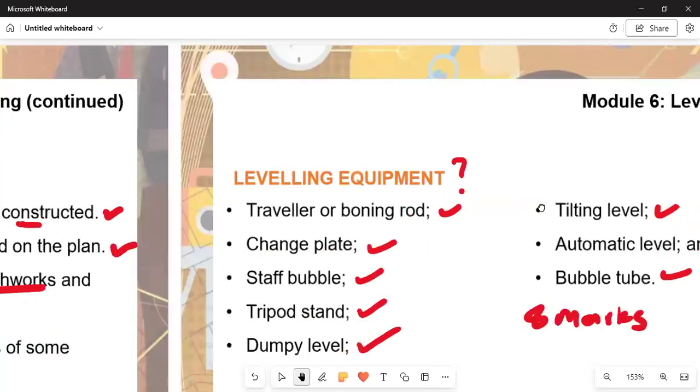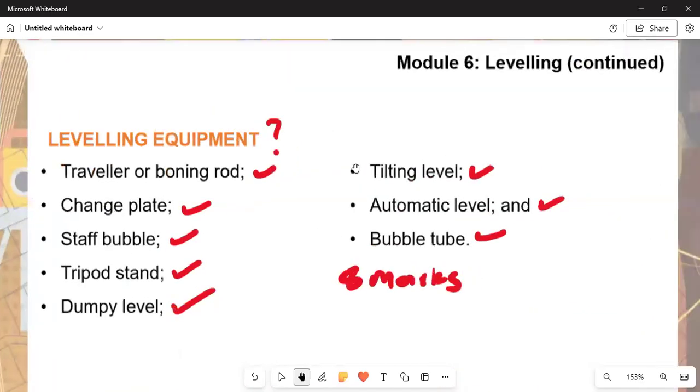Moving on again, we must understand now the leveling equipment. So the leveling equipment: number three, the staff bubble; number four, the tripod; number six, the tilting level; number seven, automatic level; number eight, the bubble tube.